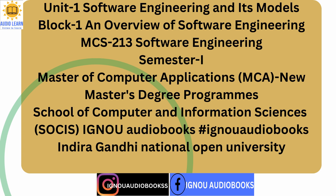The above-mentioned features are essential features of software. Besides these, additional features like reliability, future expansion, and software reuse are also considered. Reliability is of utmost importance in real-time systems like flight control, medical applications, etc. 1.1 Objectives: After going through this unit, you should be able to define software engineering, understand its evolution, understand the characteristics of software, learn about phases of the software development life cycle, and understand software development models.